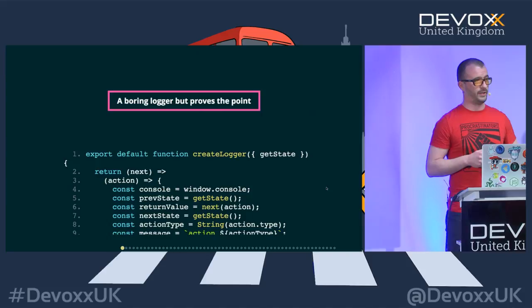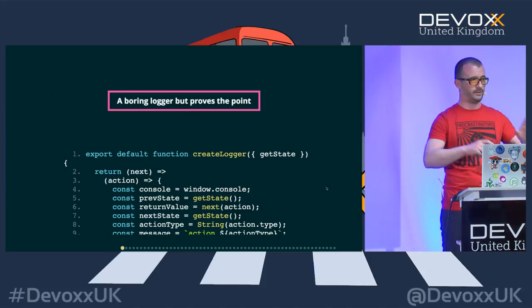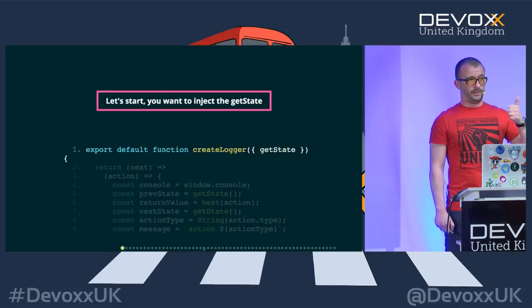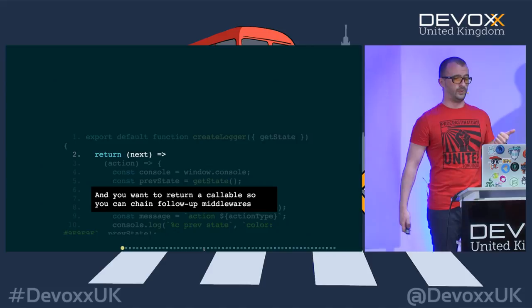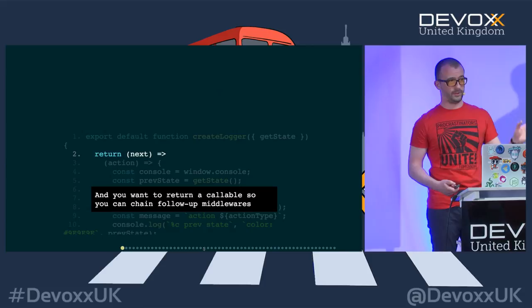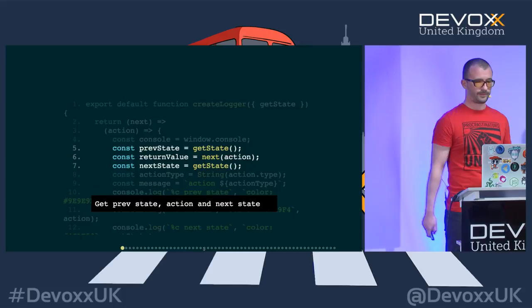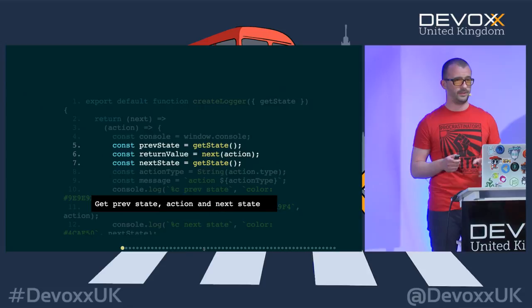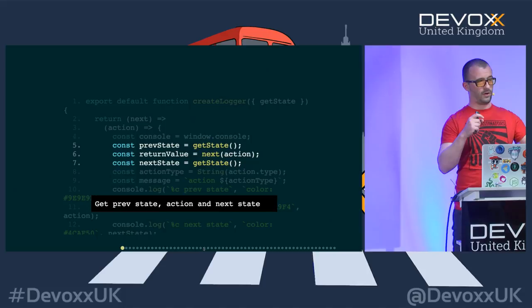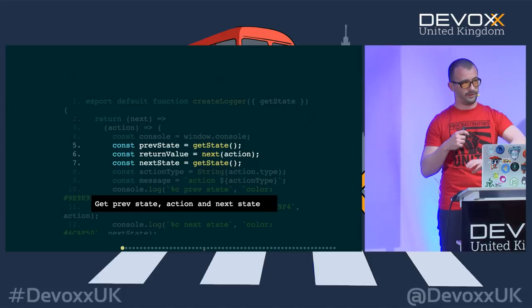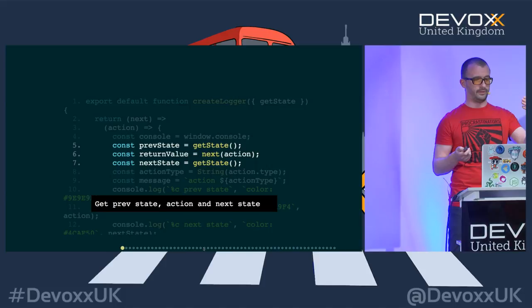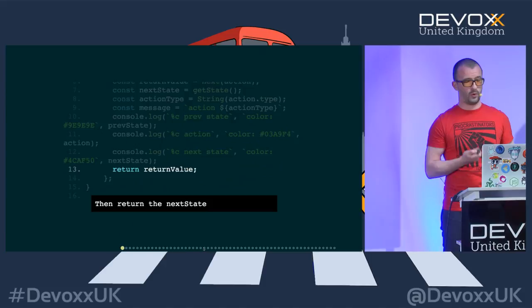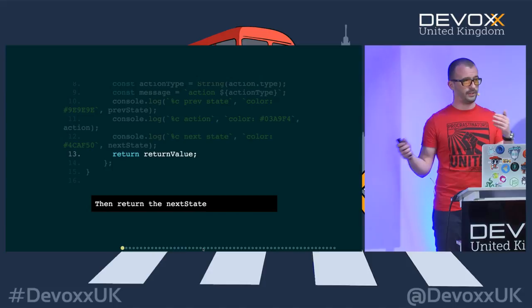This is what middleware looks like in practice. The most common example is the logger middleware — the first one you find when you Google for middleware. Initially you inject the ability to get your current state. Because we want to chain and compose multiple middlewares, we return a callable so it's composable with the next ones. As a logger, we get the current state, mutate it, and log the current state, the action that triggered the mutation, and then the resulting state. For composability, we return the resulting state so it's passed on to the next middlewares.